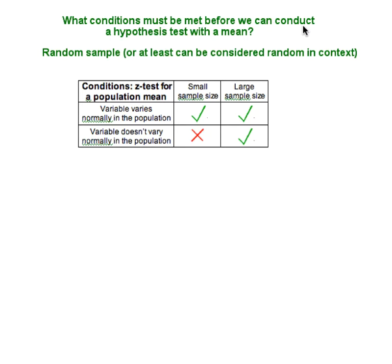As we've established earlier, all inference procedures are based on probability. So when we ask this question, what we're really asking is when can a normal probability model be used to predict the behavior of sample means?